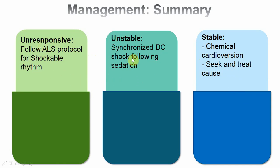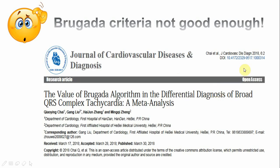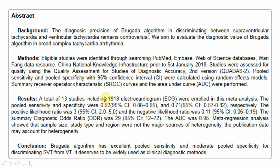There are some controversies surrounding the Brugada criteria. A 2018 meta-analysis examined the applicability of the Brugada criteria in broad complex tachycardia. Out of almost 2000 ECGs across 13 different studies, the sensitivity was 92% — so we can fairly reliably rule out VT if the criteria are not fulfilled — but the specificity was only 71%, meaning the ability to rule in VT is more moderate.